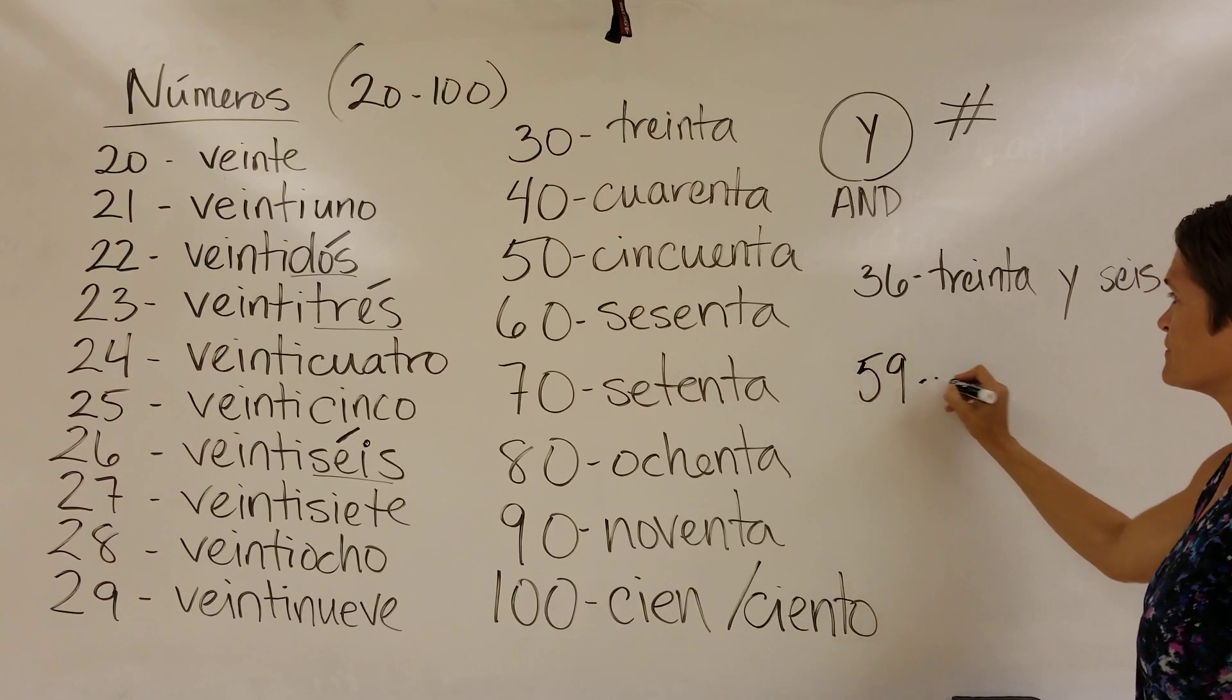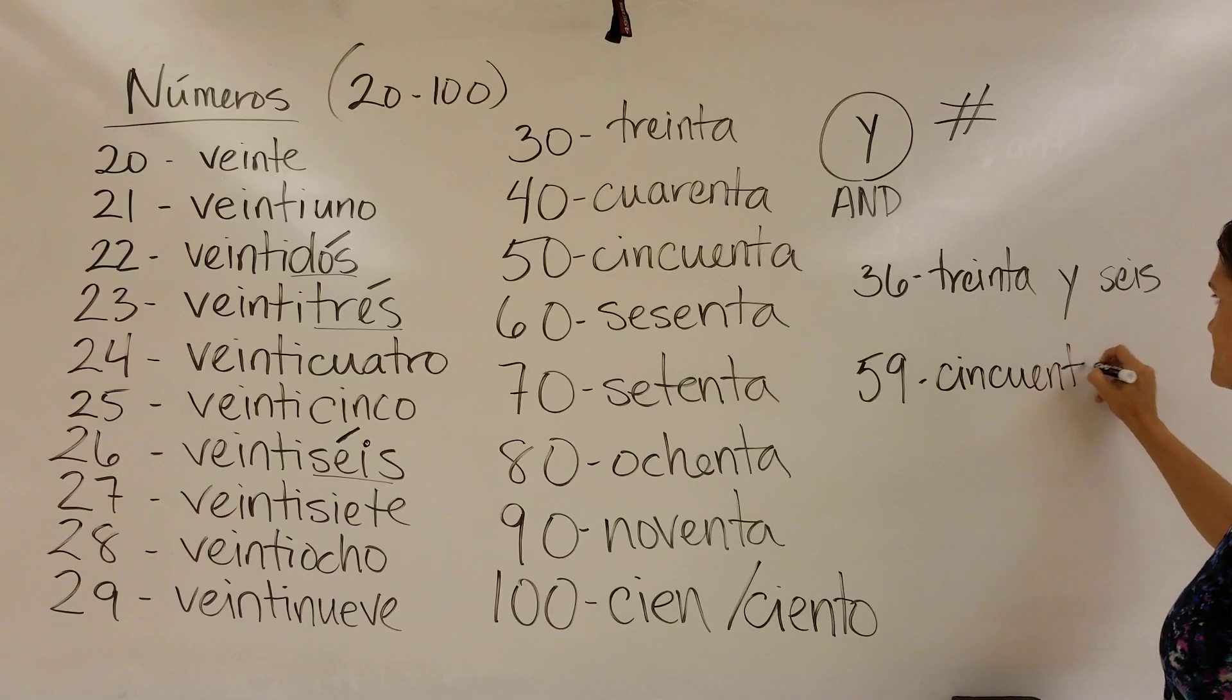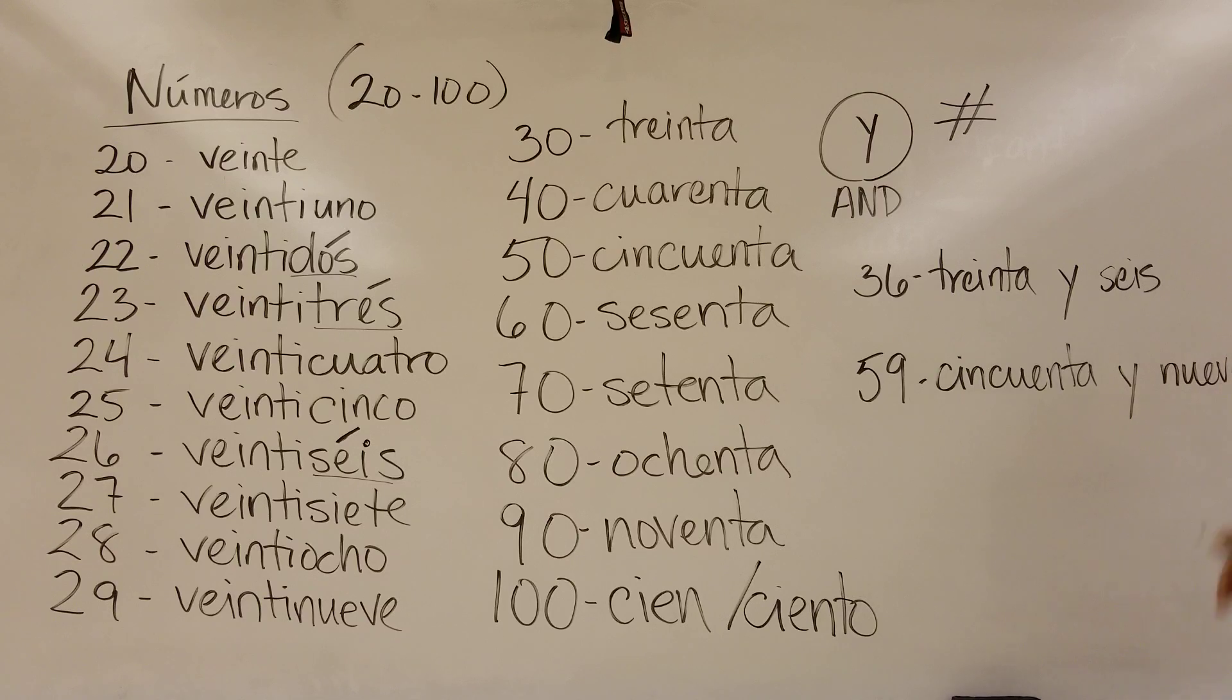Let's do one more. Let's say we want to have 59. So I would say 50, which is cincuenta. Y nueve. And it's three separate words. No accents required.